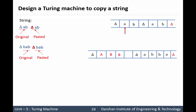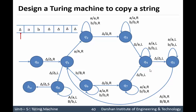So now we convert our original string from capital letters to small letters. Convert 'A' into small 'a', capital 'B' into small 'b', again capital 'B' into small 'b', and capital 'A' into small 'a'. The logic is simple: convert the small letter into the capital letter, keep moving to the right direction, and whenever we encounter our separator, then after that start pasting our symbols. Now let us implement this logic.